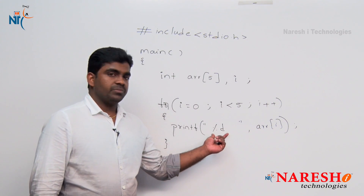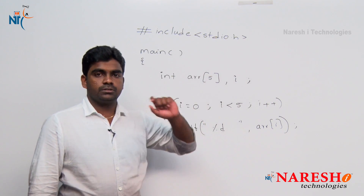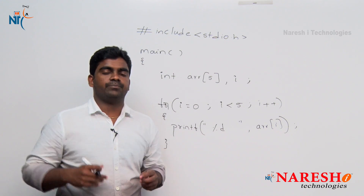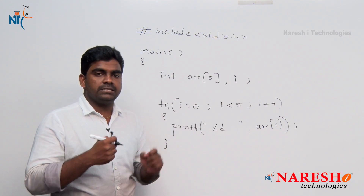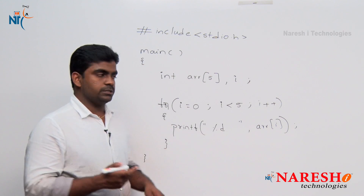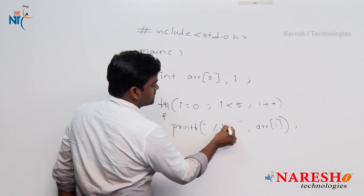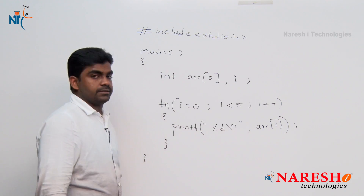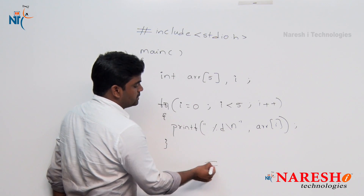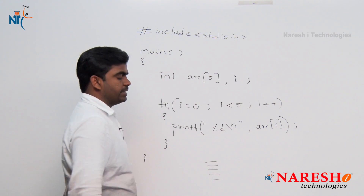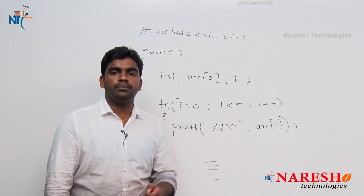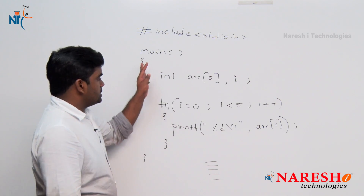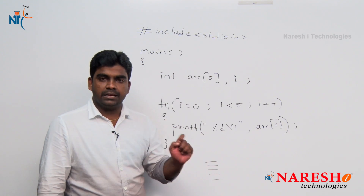If you print directly, the elements are garbage values, so it will print one after another. You cannot recognize what is the first element, second element, third element. So I am using the escape character backslash n — it will send the control to the next line. In 5 lines, all 5 garbage values will print as output. This is simply how to print array elements.